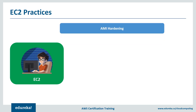AMI hardening is the first practice. AMI stands for Amazon Machine Image. What it does is, if you have an EC2 server, it lets you make a copy of it, take an image of it, and use it as a template to generate similar kinds of instances. You can define certain properties and harden your AMIs in a much better way.